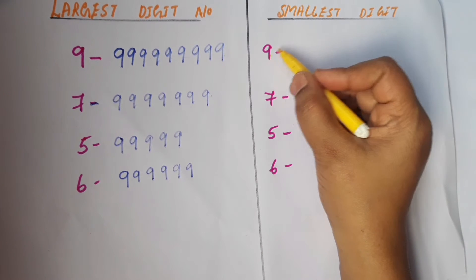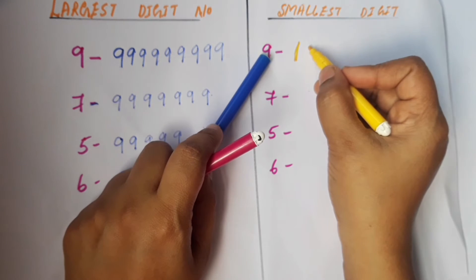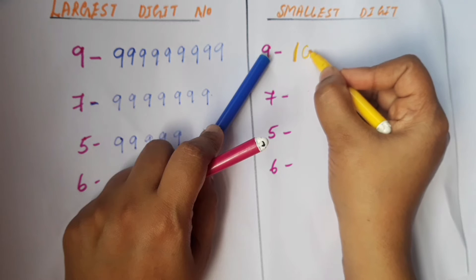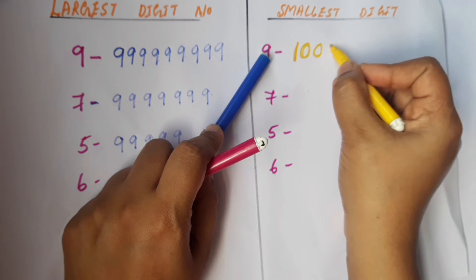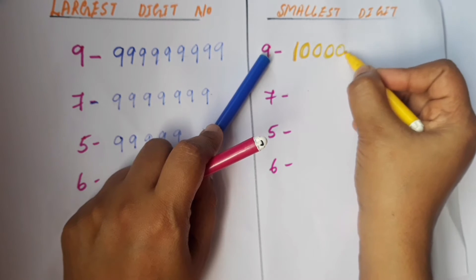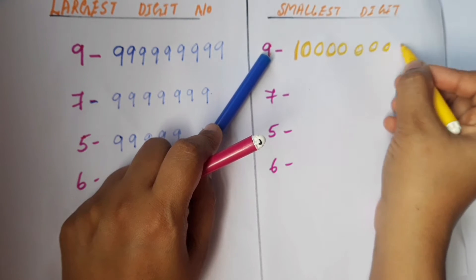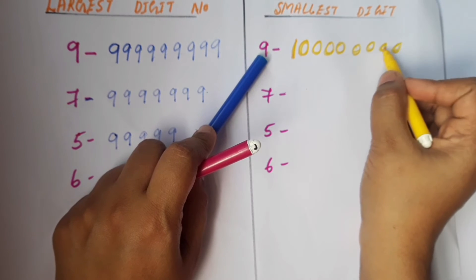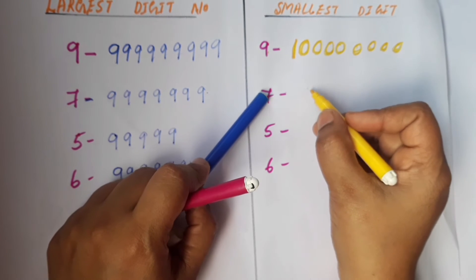At the same time, we have to write the smallest number. For the smallest number, we have to write one first. Then, how many zeros? For a nine-digit number, we have to write eight times zero: one, two, three, four, five, six, seven, eight. So totally nine digits — this is a nine-digit number.